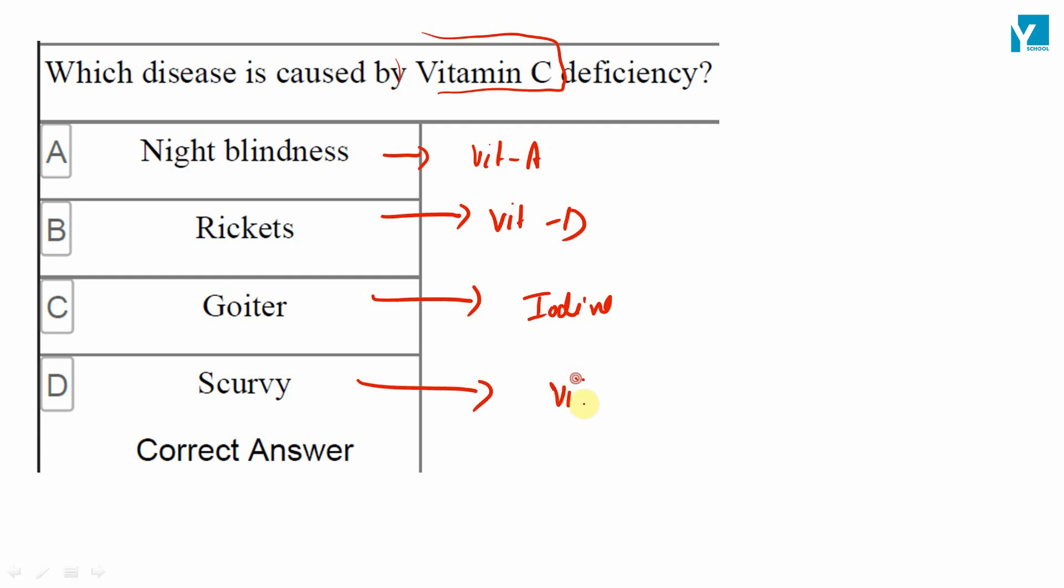Scurvy is caused by the deficiency of vitamin C. So the right answer is option D. That's what question is asking about vitamin C.